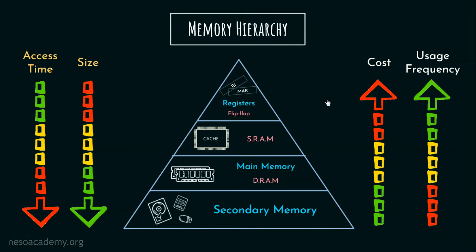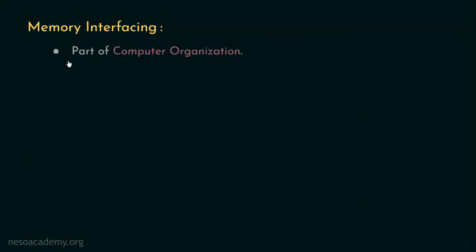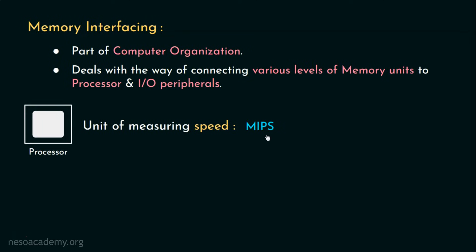In our previous discussion, we already understood that the processor is very fast, and the sole purpose of having the memory hierarchy is to bridge the speed mismatch between the fast processor and slow memory, at a reasonable cost. Coming to memory interfacing, it is a part of computer organization which deals with the way of connecting various levels of memory units, especially to the processor and also to the I/O peripherals. Generally, the speed of the processor is counted using the unit MIPS — Million Instructions Per Second — and our goal is to feed the processor with those many instructions from the memory in a faster yet cost-effective approach.